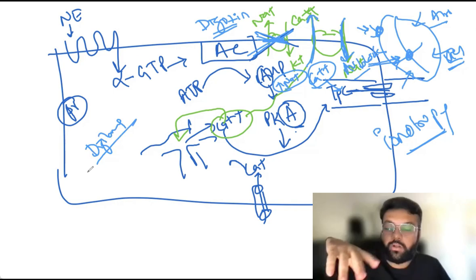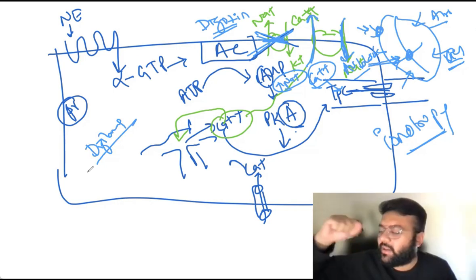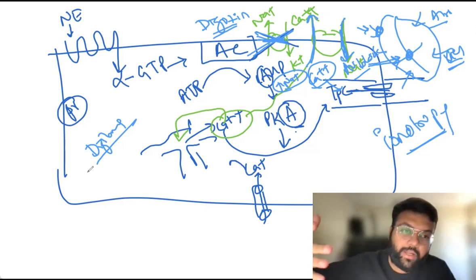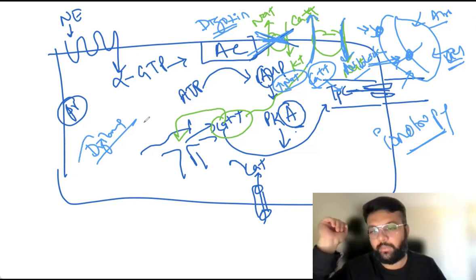Because that's what we want the digibind to do because digibind will bind with the digoxin and until the half-life of the digoxin and all the digoxins are bounded, you might have to manage the arrhythmias with the other drugs. So, that's the treatment for digoxin toxicity.